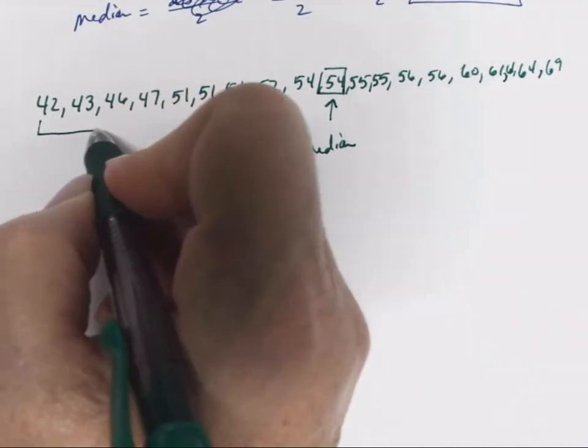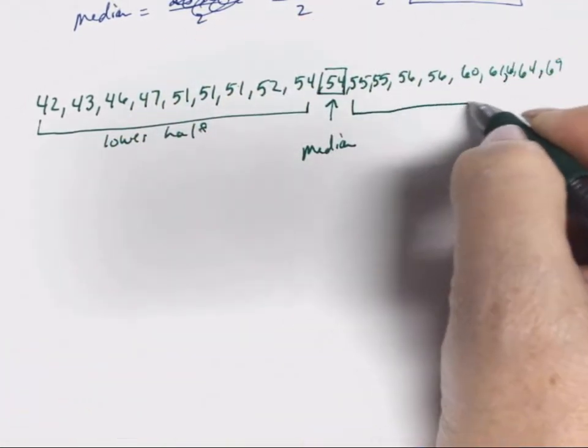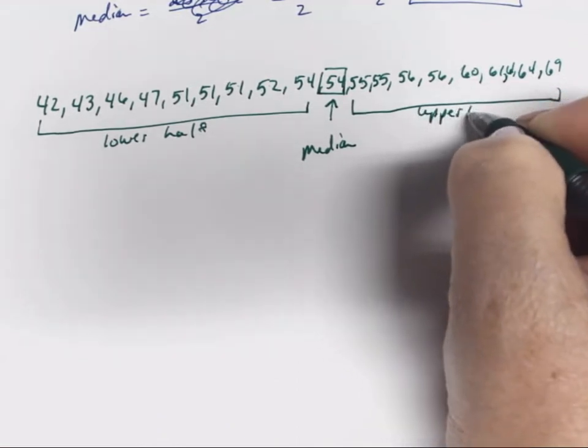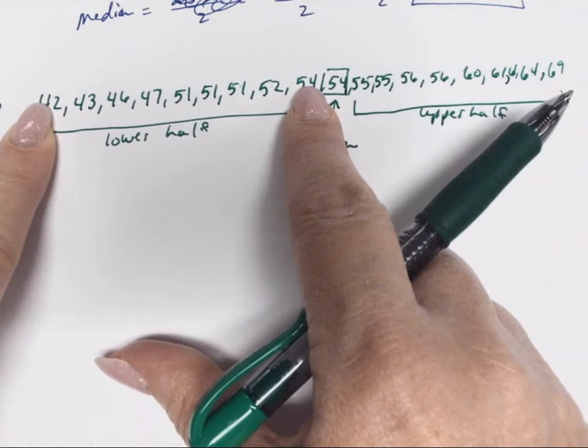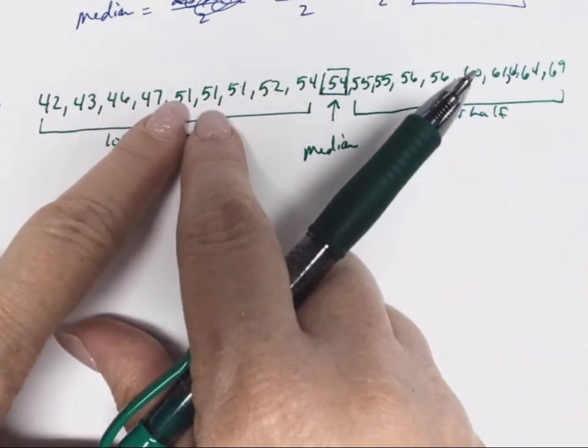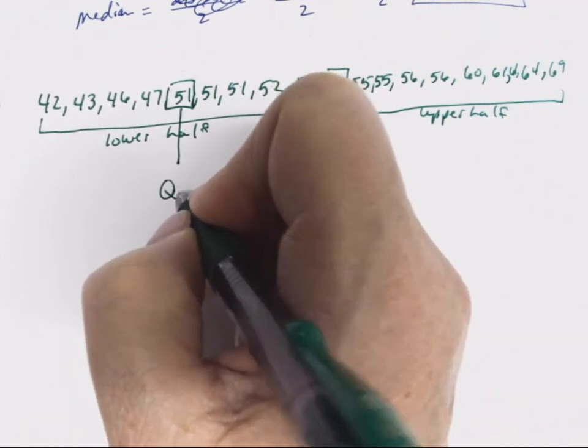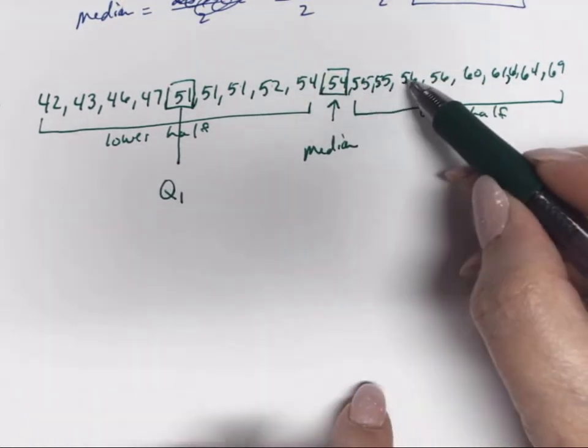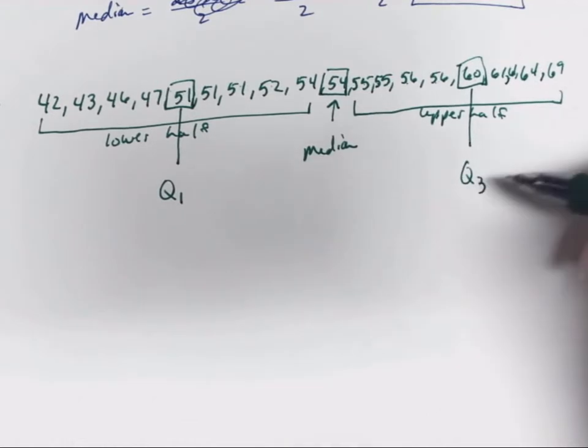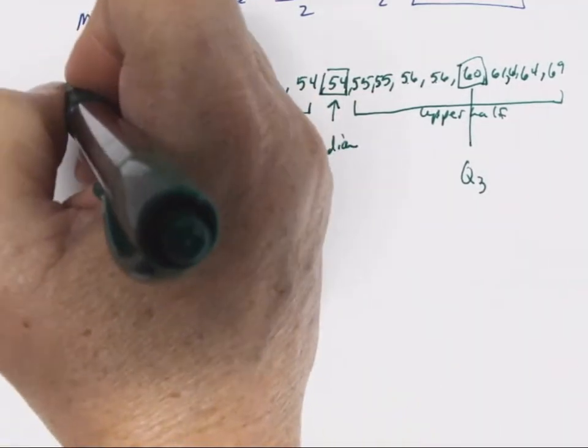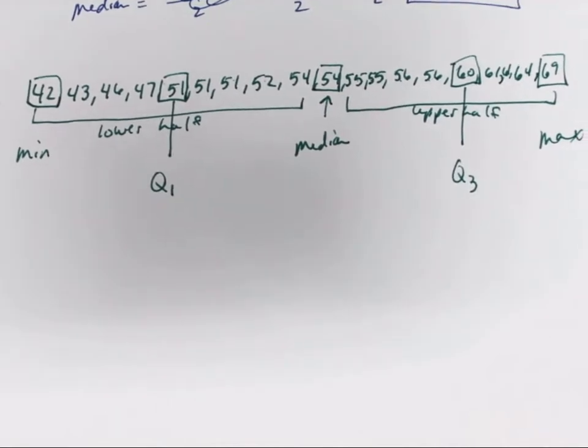This over here, this is our lower half, and this is our upper half. In that lower half, we're going to find the median. Again, we have 9 terms, so it'll be the 5th one will be the middle. So 51, this will be our quartile 1. And this one will be our quartile 3. This will be our minimum, and this one will be our maximum. So that is our summary.